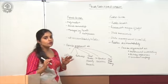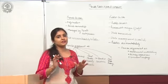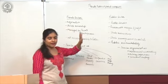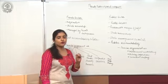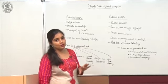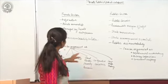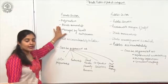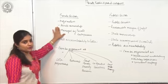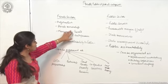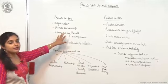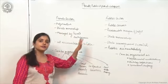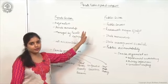The first and the foremost motive of a private sector enterprise is profit maximization. They come into existence with a basic motive of maximizing profits. Secondly, they are owned, controlled and managed by rich private entrepreneurs. Government has got no interference at all in the private sector enterprises.